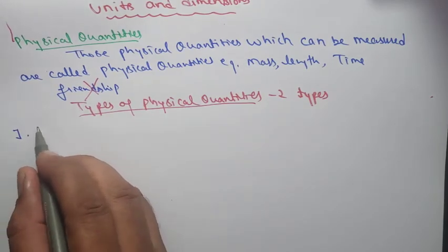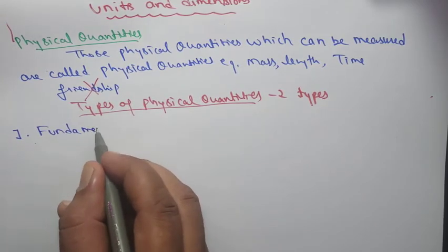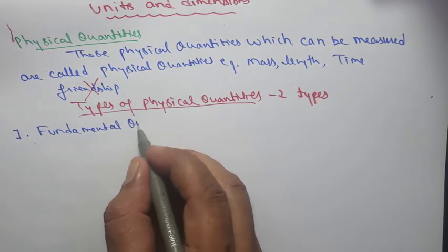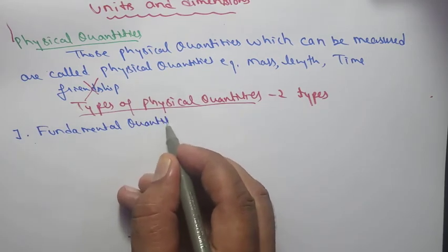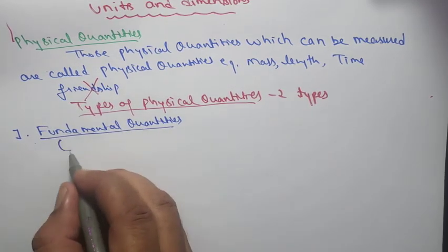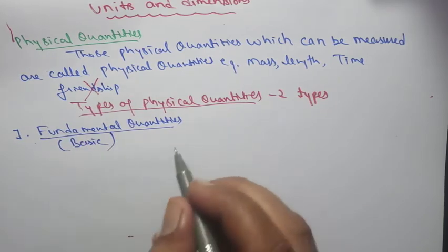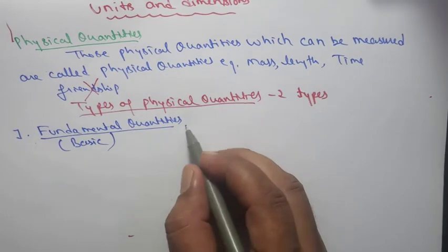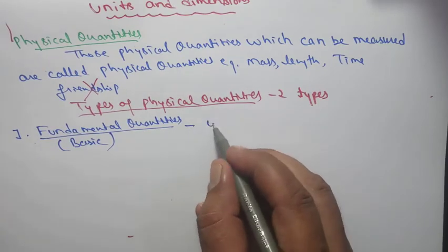Number one: Fundamental or basic quantities. So what are basic quantities? These are quantities which are not usually defined in terms of other physical quantities.